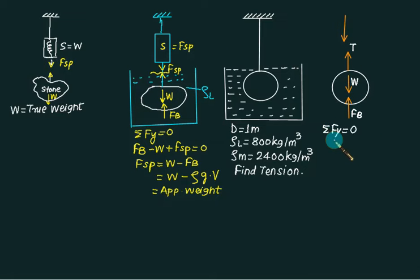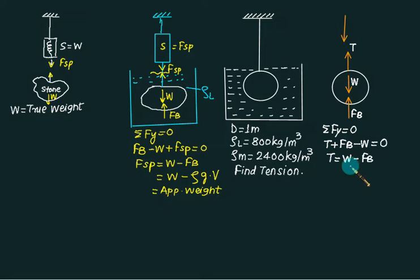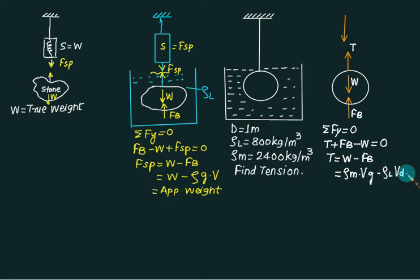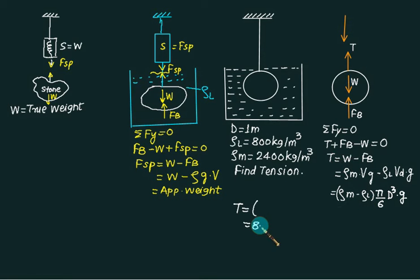Applying sigma F = 0: tension is upward (positive), buoyant force is upward (positive), weight is downward (negative). So tension T = W − buoyant force = ρ_m × g × V − ρ_L × g × V_displaced. Since the body is fully submerged, volume displaced equals volume of sphere. Factoring: T = (ρ_m − ρ_L) × g × (π/6)d³ = (2400 − 800) × g × (π/6)(1)³ ≈ 8.2 kN.